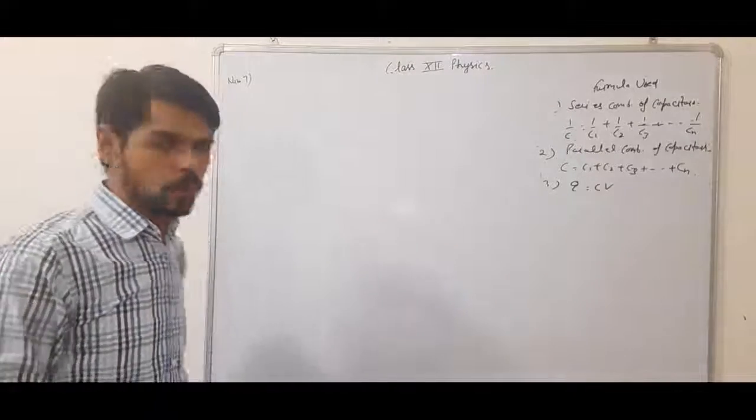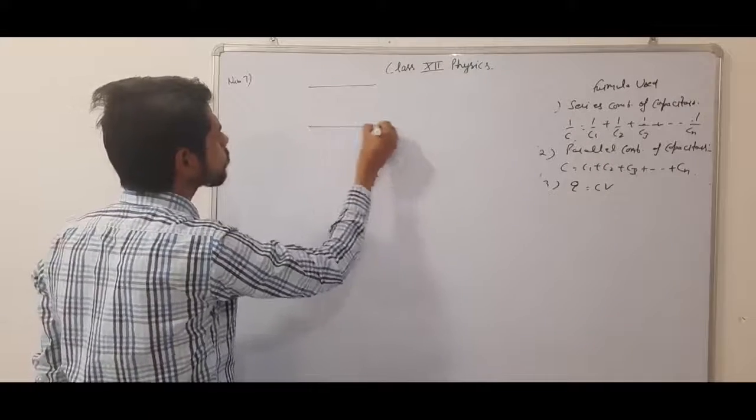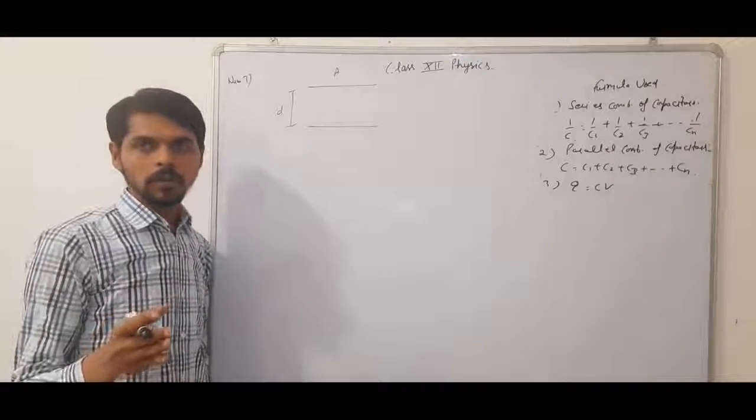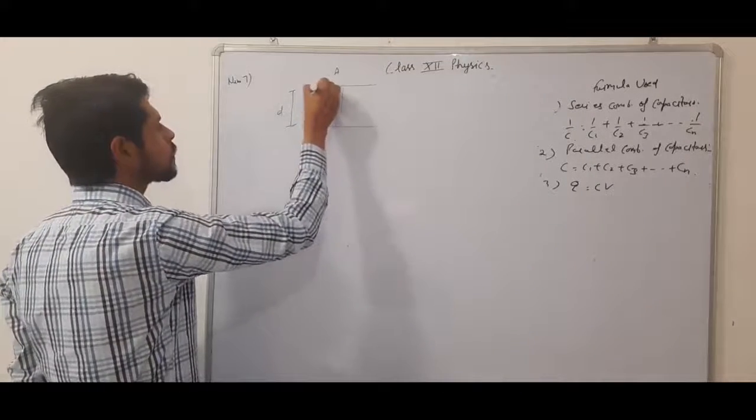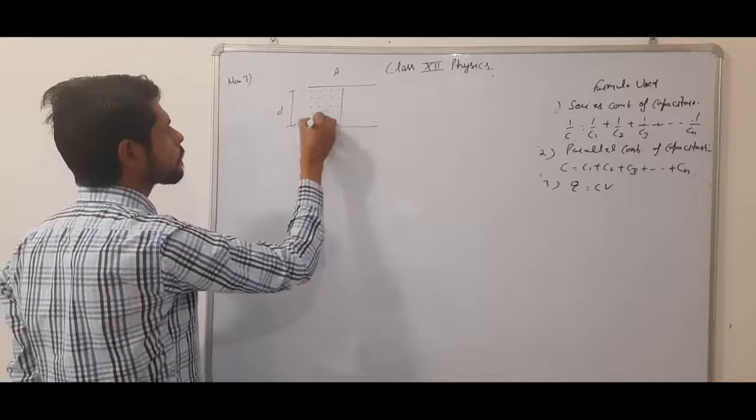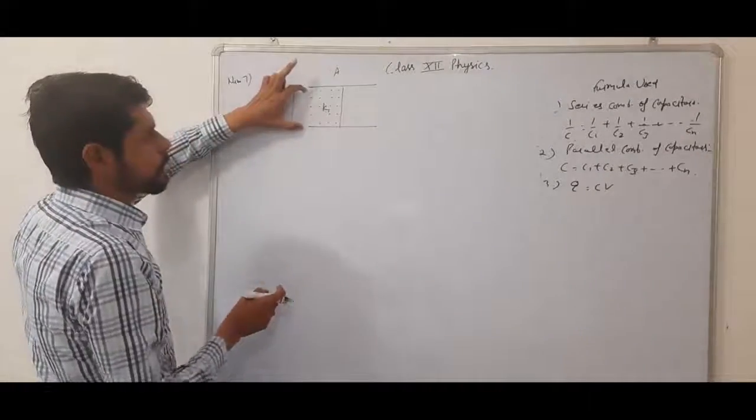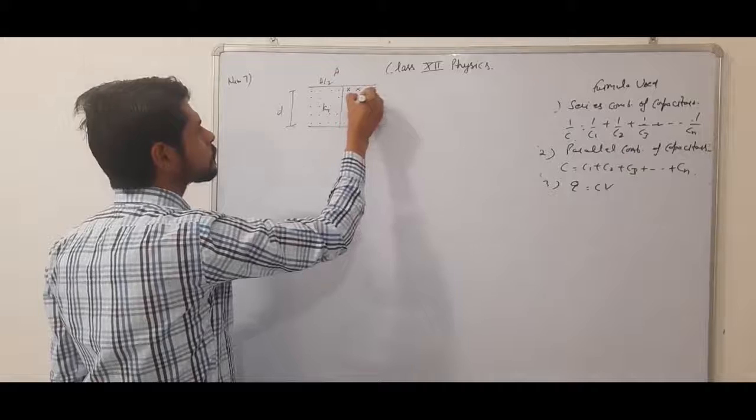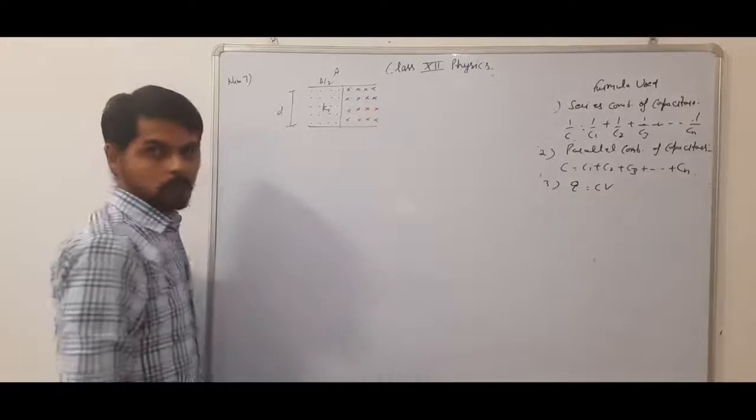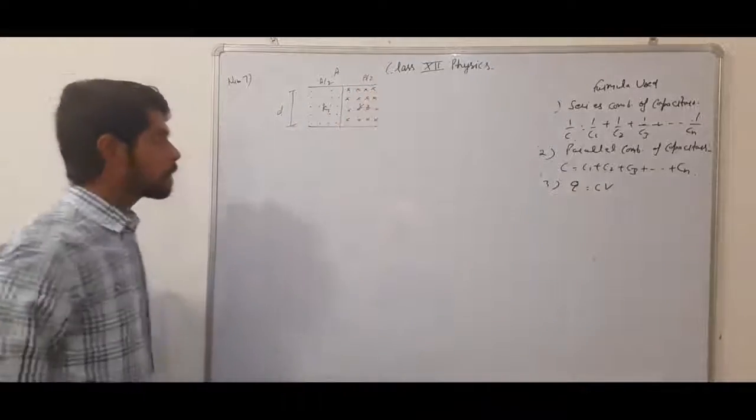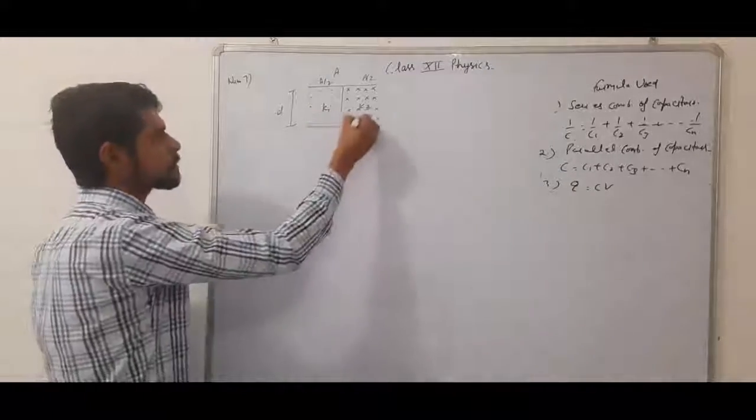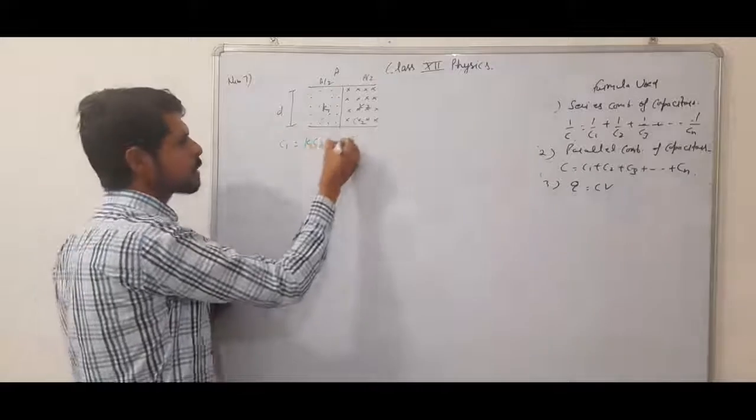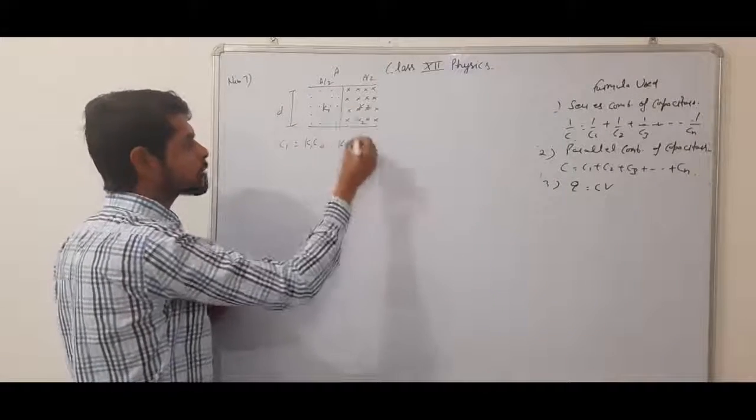In the same concept, if two dielectrics are filled in a capacitor and they separate the area into two equal halves, area A by 2 for each dielectric constant, then C1 and C2 are in parallel.